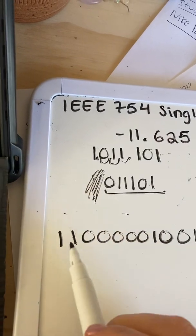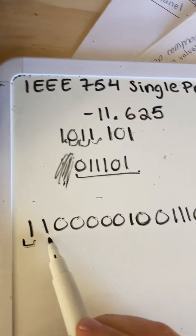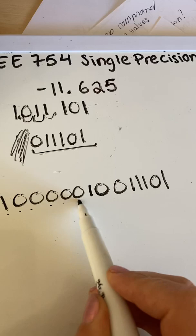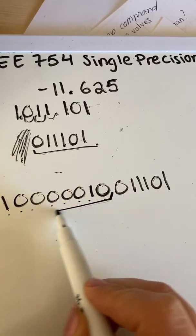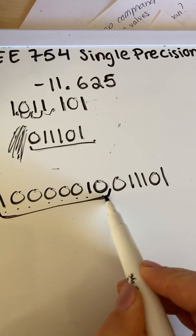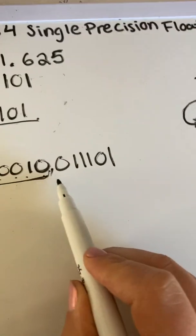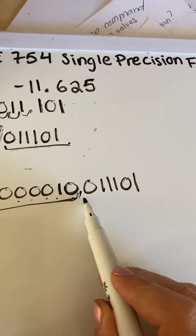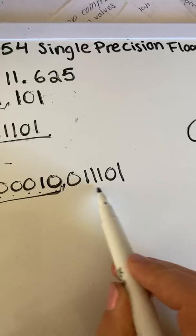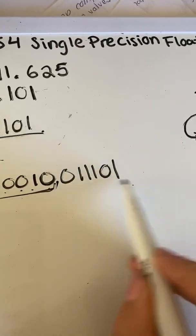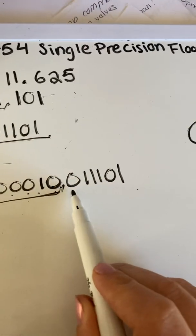And now, so we have our one bit and we have our eight-bit biased exponent. Now this is not 23 bits. So we're going to need to add zeros to make this account for 23 bits.